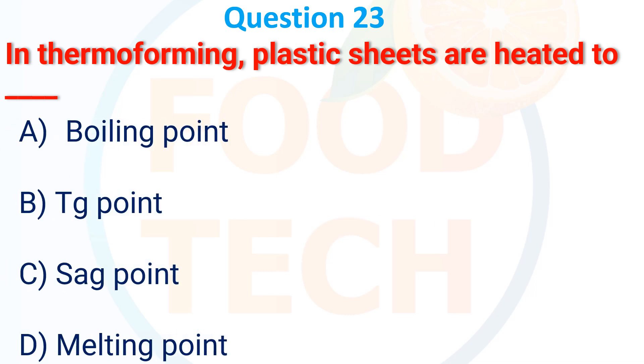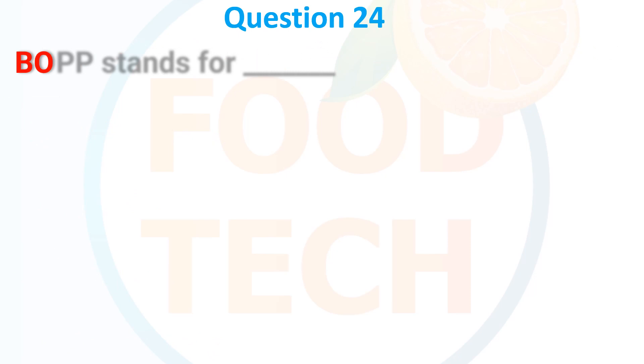In thermoforming, plastic sheets are heated to which point? (a) Boiling point, (b) Tg point, (c) Softening point, (d) Melting point. The answer is (b) Tg point.